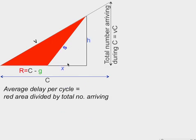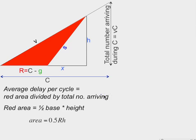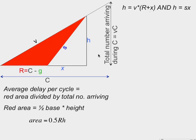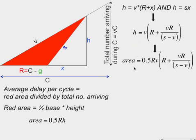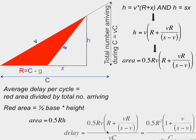To find this area we need to define a couple of dimensions: X and H. The red area is one half the base, which is R, times H. We need to find the height H. The height is V times (R + X), or it's also S times X — both of those meet at the same point, so we can find a relationship for H in that way. The area is one half the base times this height. Dividing the area by the total number of vehicles arriving, V·C, gives us the delay equation.